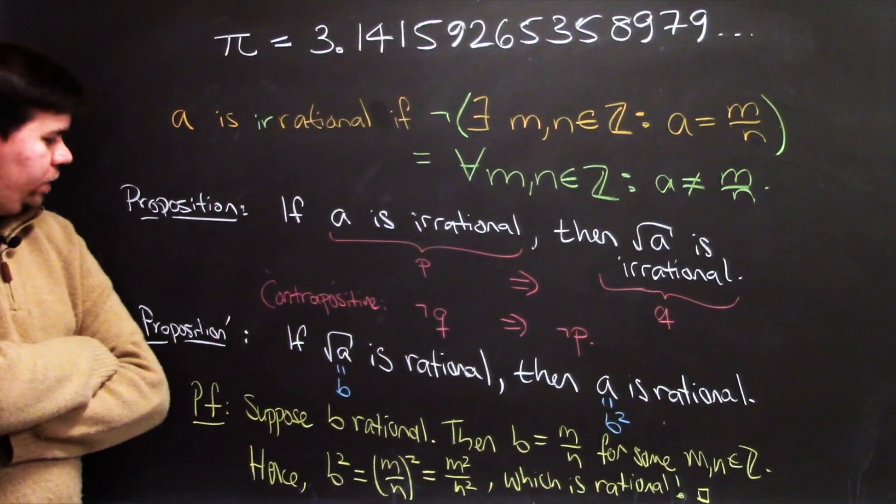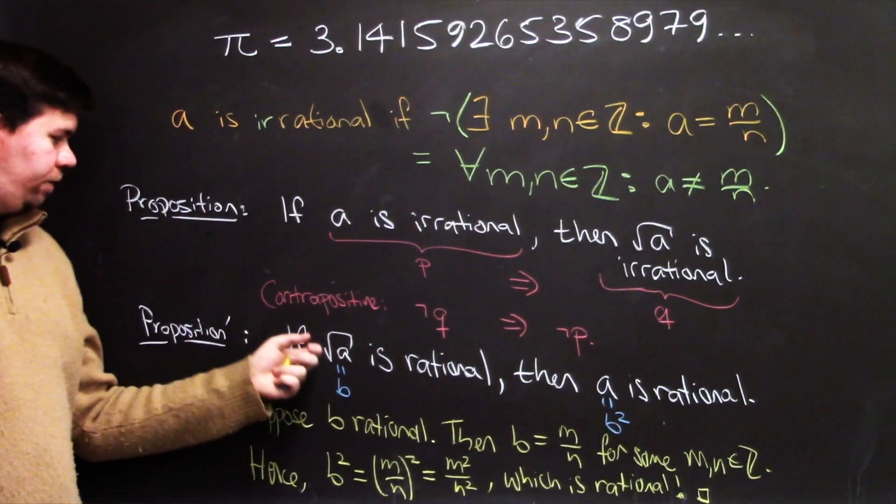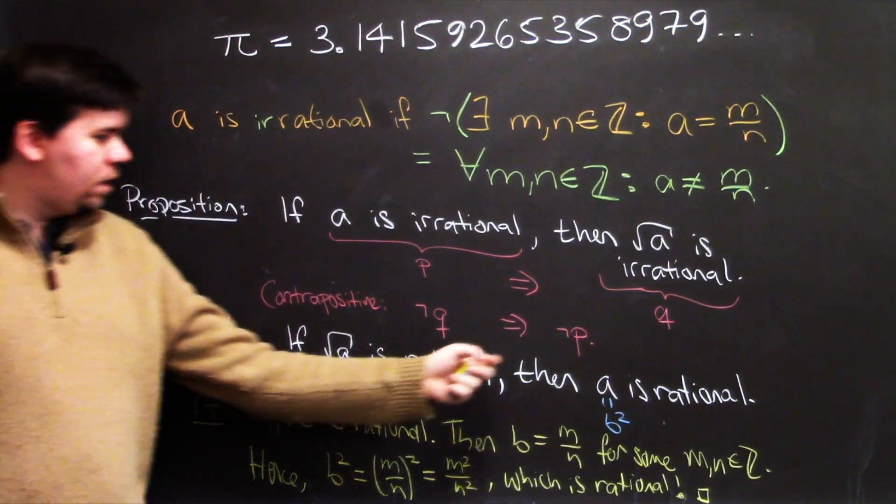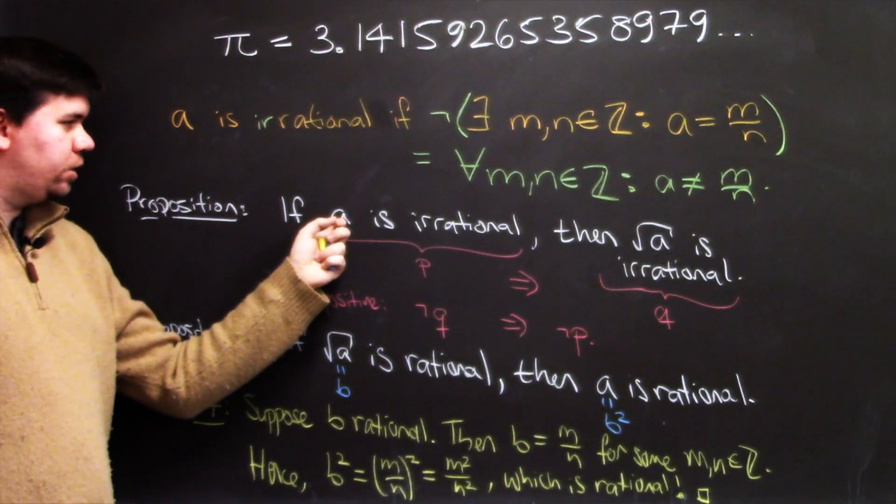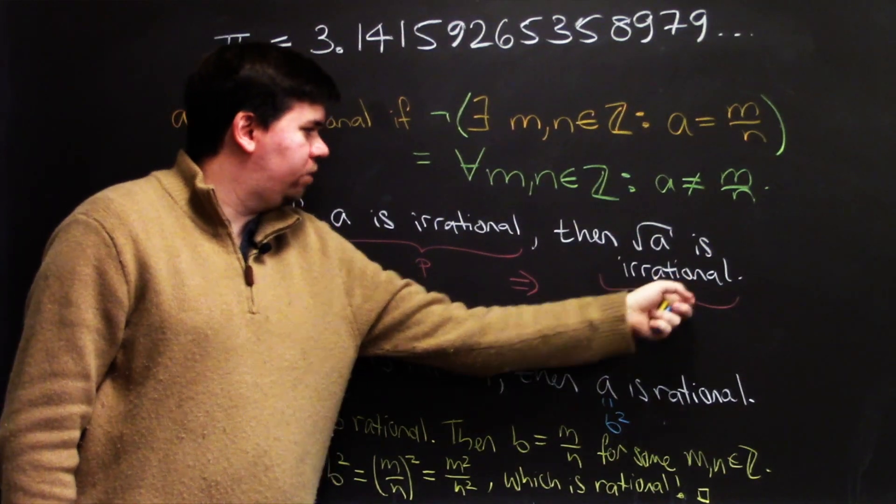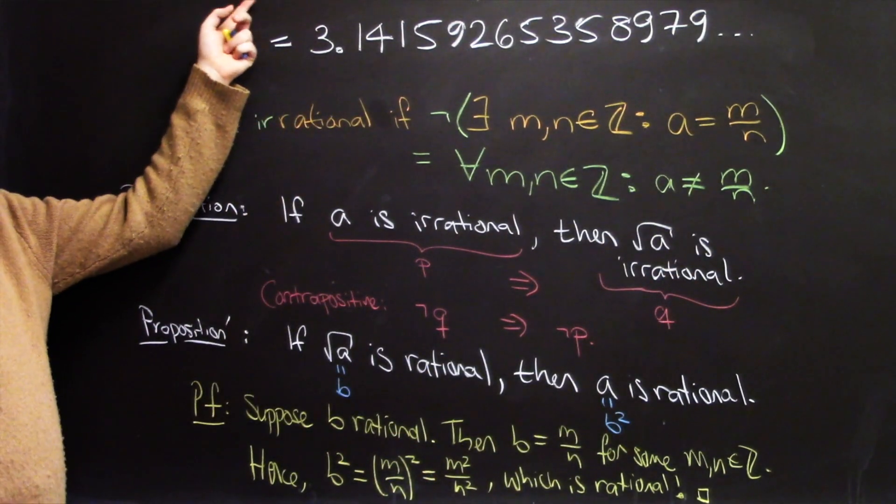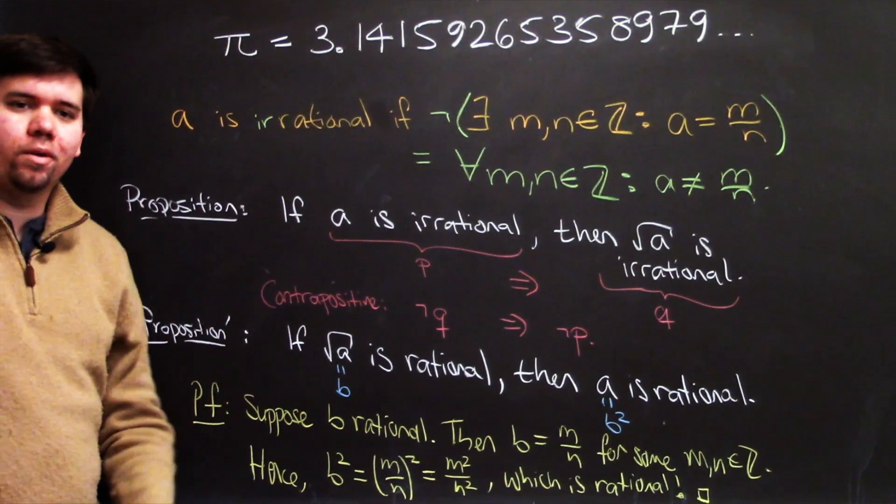So we've shown that if b is rational, then b squared must be rational as well. That is, if the square root of a is rational, then a must be rational as well. Hence, if a is irrational, the contrapositive, the square root of a must be irrational. And hence, since we know pi is irrational, the square root of pi is also irrational.